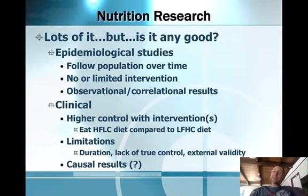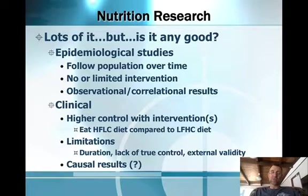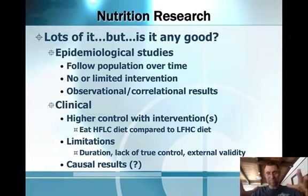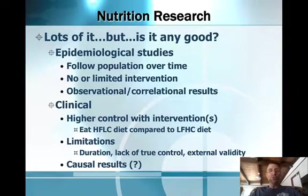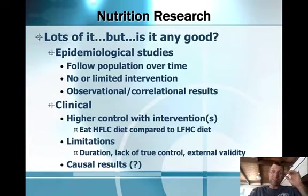Regarding nutrition research — we don't get into too many specific articles in this class, but I want to point this out because we do discuss certain types of research outcomes. In the world of nutrition, research is tricky. There are two general categories of nutrition research, neither of which is perfect. The first is epidemiological studies — these are usually large-scale studies tracking hundreds, if not thousands of people over time.